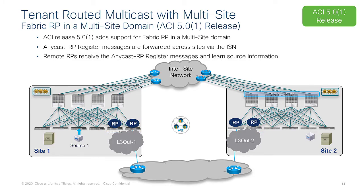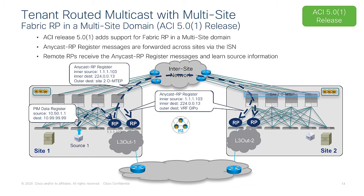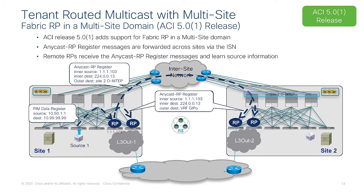When a source starts sending traffic, the first-hop router sends a PIM data register toward the RP. Since there are two local RPs that are closer from a routing perspective, one is selected — in this example, RP1 on border leaf 1 in Site 1. Once that RP receives the source information, it sends an Anycast RP register message to sync source information with the other RPs locally in the site and also across the inter-site network to reach border leaf RPs deployed in remote sites, allowing all RP nodes to sync source information.